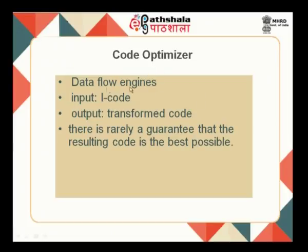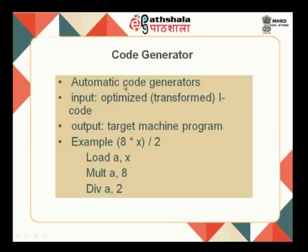The data flow engine takes intermediate code as input and produces transformed code. A basic rule in code optimization is: if the cost of optimization is greater than the cost of generation, do not optimize. The optimizer applies techniques such as common sub-expression elimination, dead code elimination, copy propagation, constant folding, and algebraic simplification to generate optimized code, which the code generator then uses to produce assembly-level output.